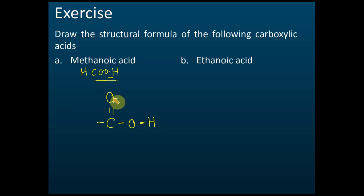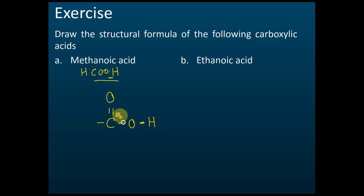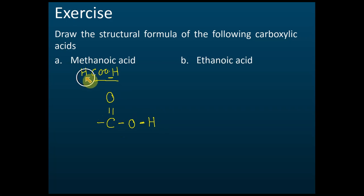Check that every oxygen has two covalent bonds and every hydrogen has one covalent bond, and every carbon has four covalent bonds — one, two, three, four. With one remaining hydrogen placed on the carbon, this completes the structural formula of methanoic acid.